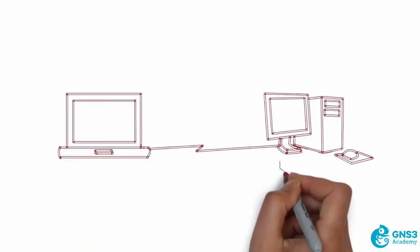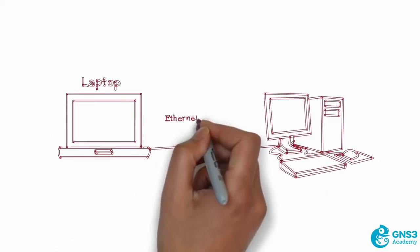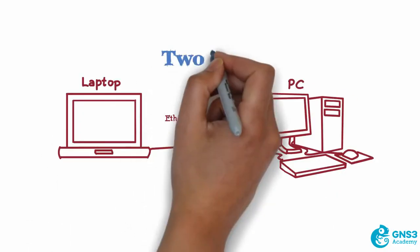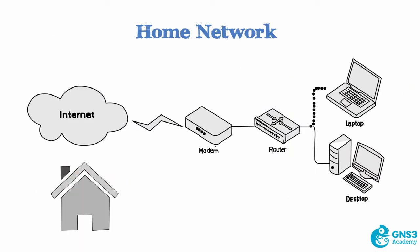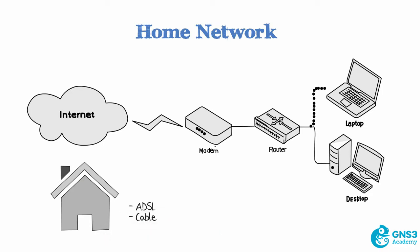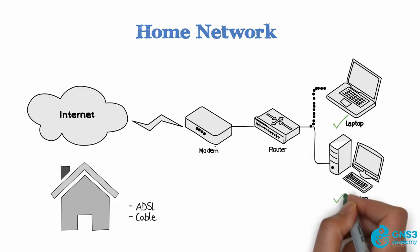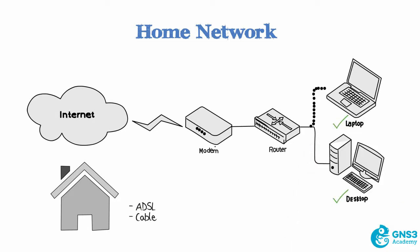Building on our example of a simple network consisting of two PCs, at home you may have a network connecting you to the internet using an ADSL or cable or some other type of broadband connection, which allows you from your laptop or desktop to access the internet. You may have an ADSL router connecting to a modem or directly to your internet service provider, or ISP.